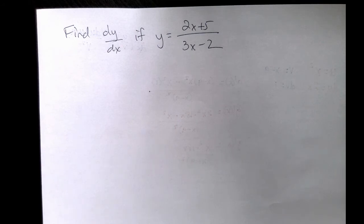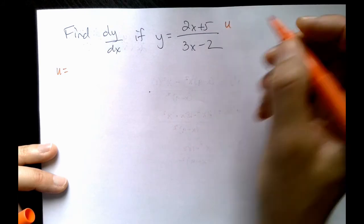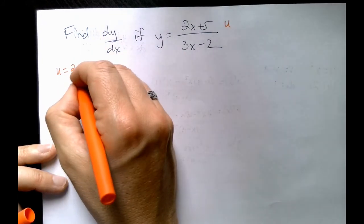Just like before, what we want to do is figure out what is our numerator quantity. We're going to call that u. And what is our denominator quantity? We call that v.